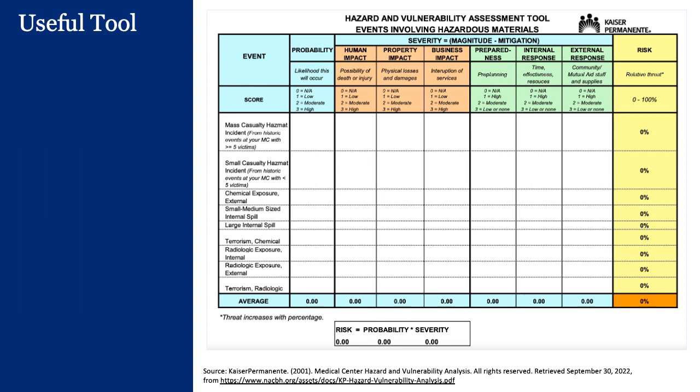By doing this activity — populating this Excel spreadsheet depicted on this slide — one can calculate the relative degree of risk for different types of events. This allows for the necessary prioritization that is all part and parcel of hazard vulnerability assessment and acting upon it.